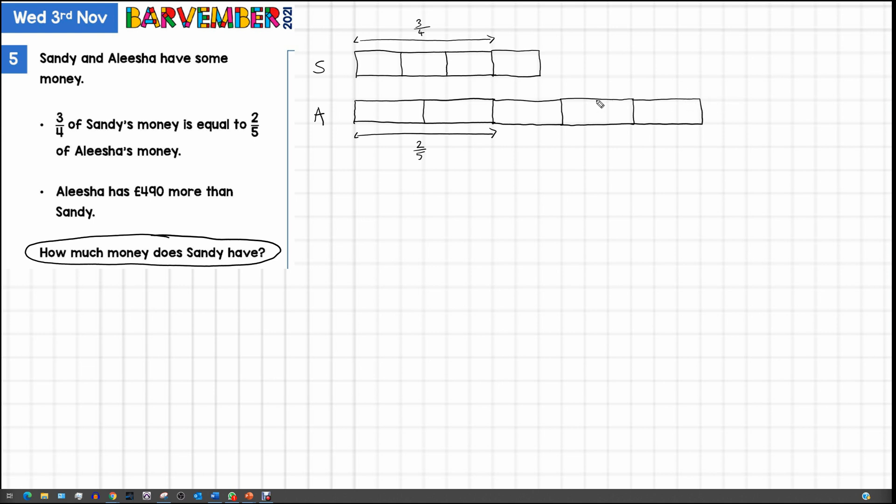What are we told? We're told that Alicia has £490 more than Sandy, so that's the difference here. We can go all the way up to there, that's where it would match. And this is the difference. We know that this is £490.